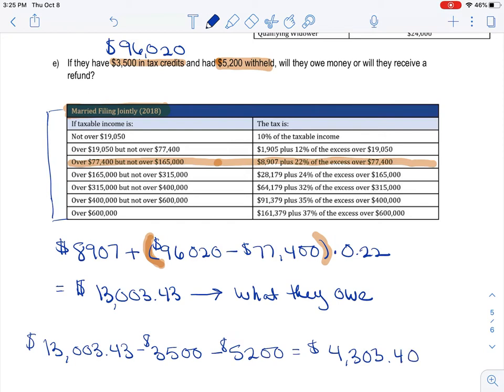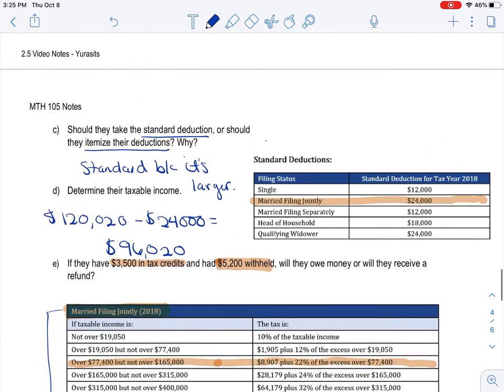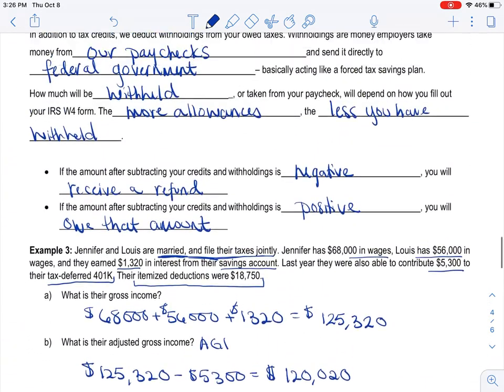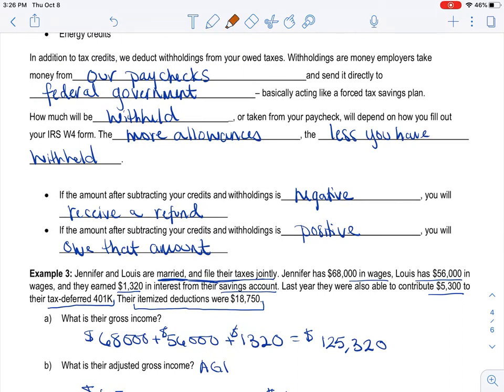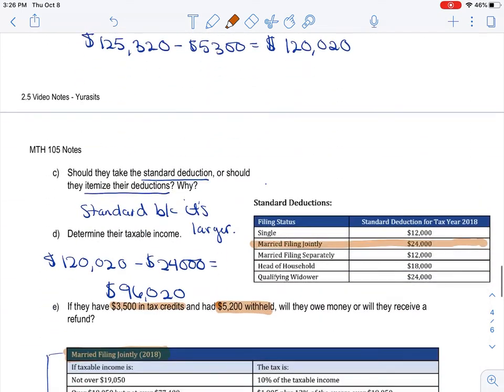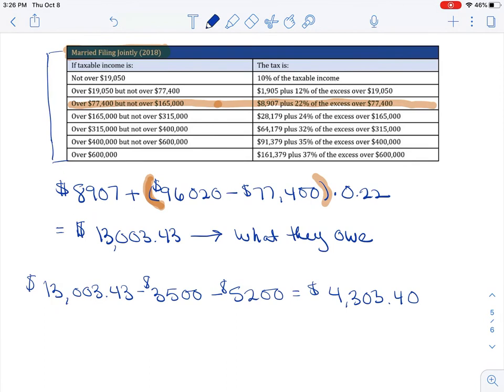And so when you do this in your calculator, we end up getting $4,303.40. Now, going back to what we were talking about before we did the example, I'm just going to go back here real quick. It said if you get a positive, it's what they owe. So, sadly, they owe $4,303.40 in taxes, in federal taxes. That's all we're going to focus on in this class.